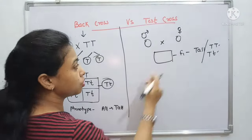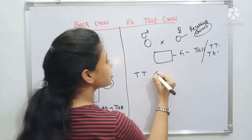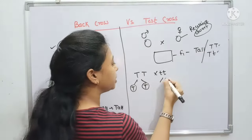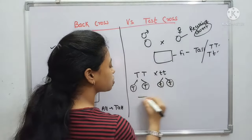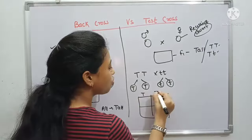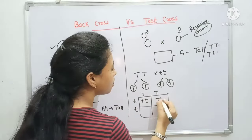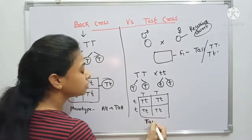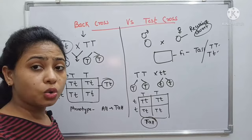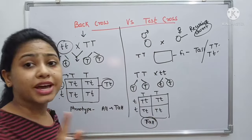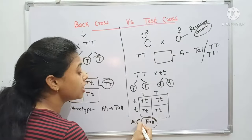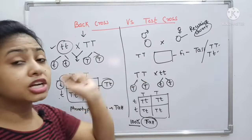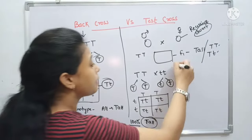I need to determine which genotype is responsible for this F1 generation, so let's consider both conditions. I have taken capital T, capital T and crossed it with the recessive trait. If all plants are tall — 100% dominant character phenotype — then the F1 genotype is homozygous dominant.